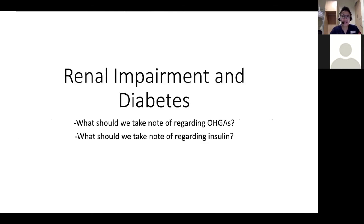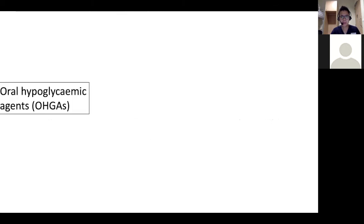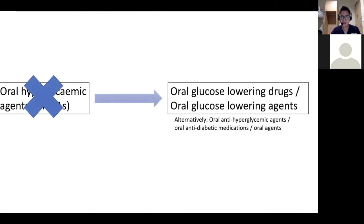Many of our patients with diabetes have concomitant renal impairment. Diabetes causes diabetic kidney disease, and medications need to be considered in terms of dosing and contraindications. The term OHGAs is no longer favored because not all oral agents cause hypoglycemia — the preferred terminology is now oral glucose-lowering drugs, oral anti-diabetic medications, or oral anti-hyperglycemic agents. This ACG from the ministry gives a quick overview of medications we can go through.